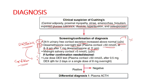In normal persons, dexamethasone inhibits ACTH by negative feedback, causing plasma cortisol to fall — but this does not happen in Cushing syndrome, so cortisol remains above 50 nmol/L. The third screening test is midnight salivary cortisol — positive if more than 5 nmol/L. If one of these screening tests is positive, we proceed to the confirmatory test.